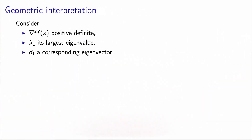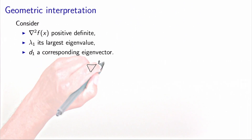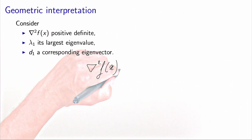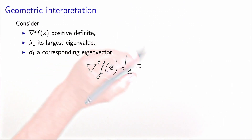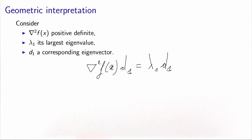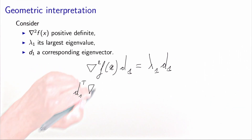Let's go back to the optimization context. Let's consider a function f, and let's consider a value of x such that the second derivative matrix is positive definite. We define λ₁ to be its largest eigenvalue, and d₁ would be the corresponding eigenvector. It means that the Hessian times d₁ is equal to λ₁ times d₁. This is the equation characterizing the eigenvalue and the eigenvectors.